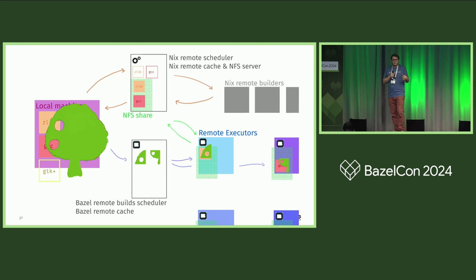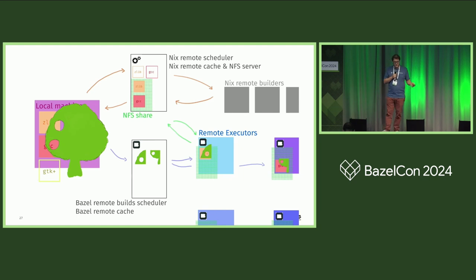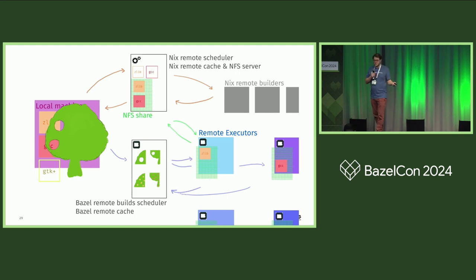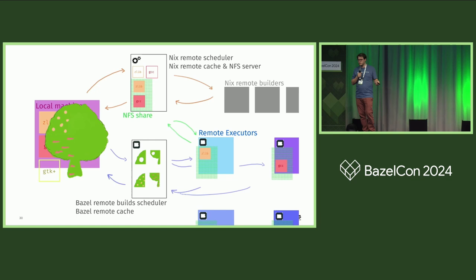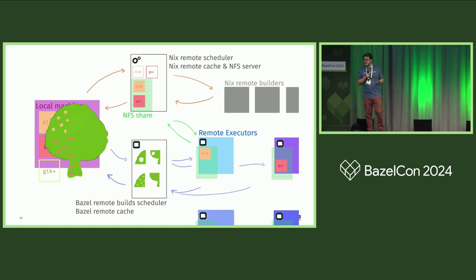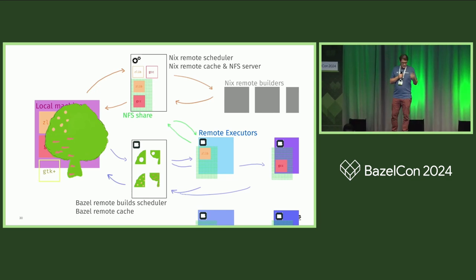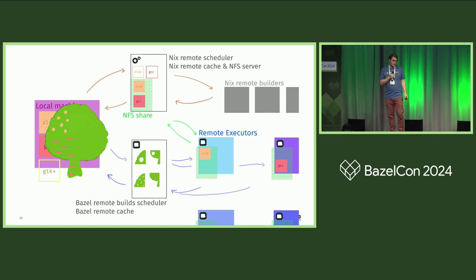You know the packages will be present because they were built before, so there's no way we're depending on something missing. The build happens, the outputs get back into the BuildBuddy cache — the remote execution cache — then downloaded locally, and you have a remotely executed build. Perfectly hermetic and clean, thanks to the magic of all these things.